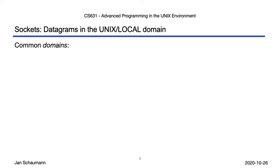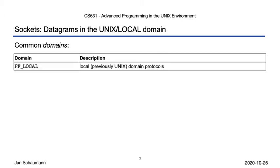The available domains to select from vary depending on the operating system and version, but at a minimum you should find the following to be supported. PF_Local, the local domain — previously referred to as the UNIX domain. The different domains used to use the AF prefix for address format, but the PF prefix used today stands for protocol family. This domain is for communications on the same system, and sockets are named with a standard path name. A socket of this type does indeed appear in the file system as a file of type socket, and is used as a rendezvous point by the communicating processes.